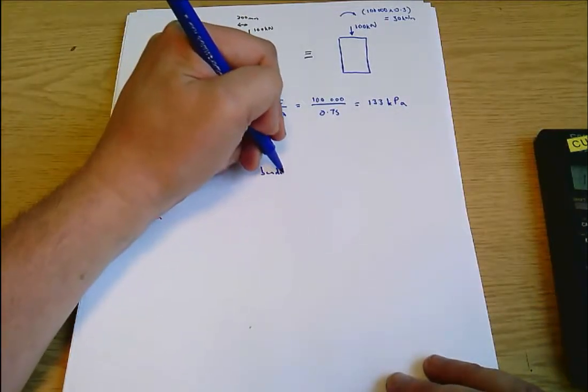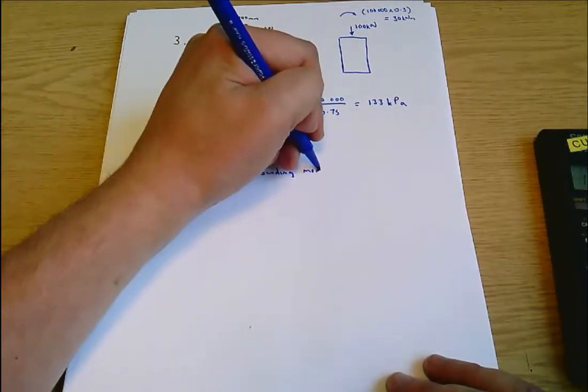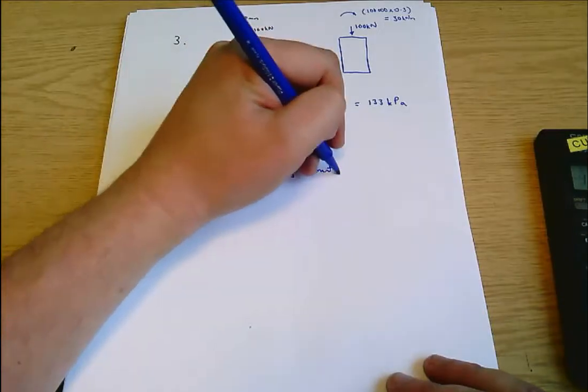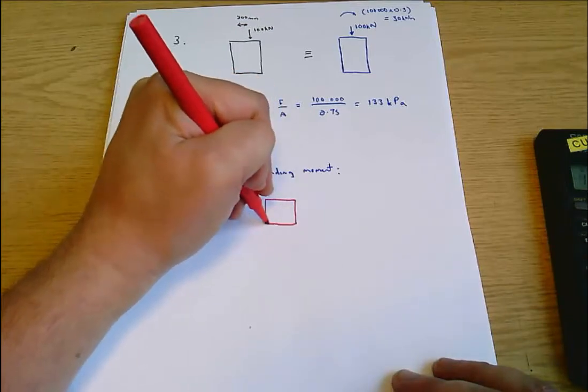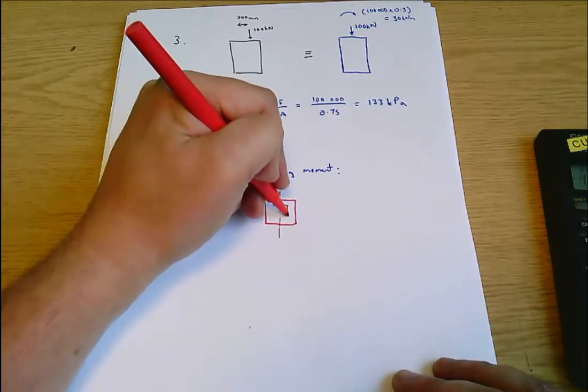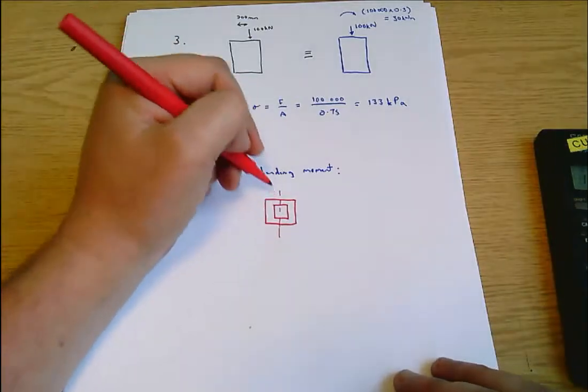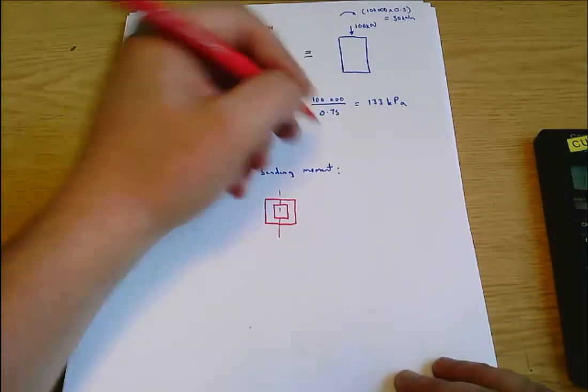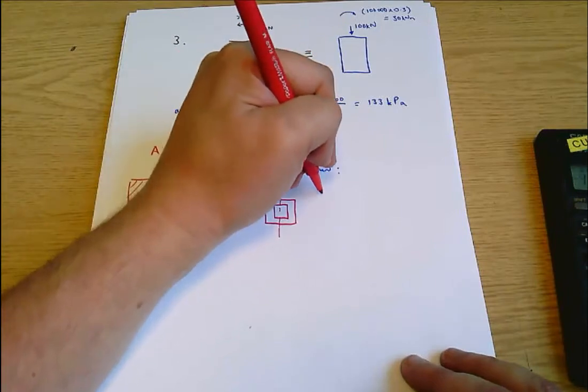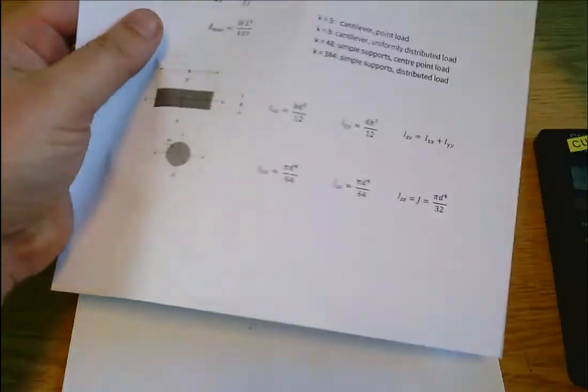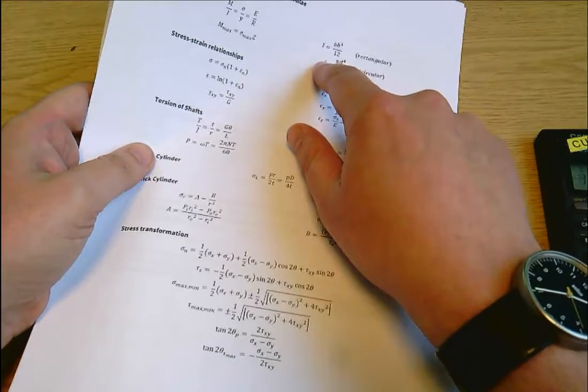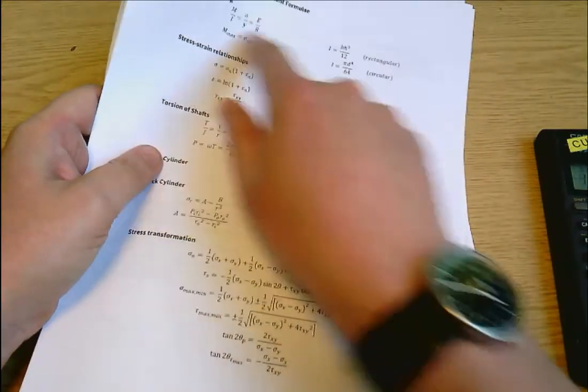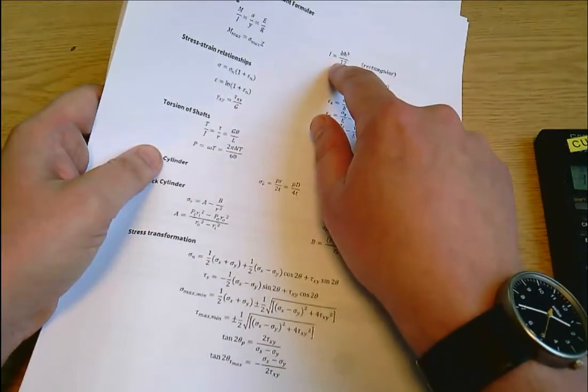Then we see the bending moment problem. It's just worth thinking - the bending moment, we need to think about the neutral axis. In bending it's symmetric so it's going to be straight down the middle. The second moment of area for a rectangle is bh cubed over 12.